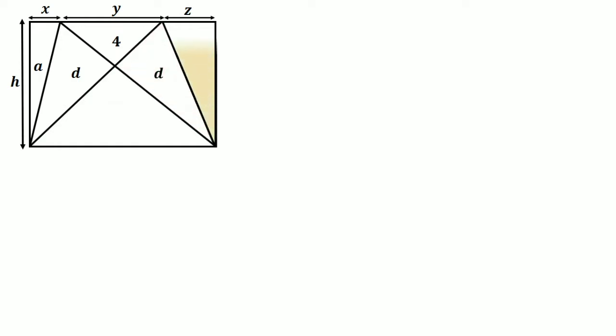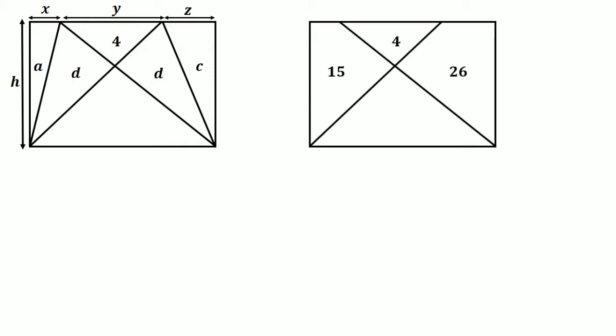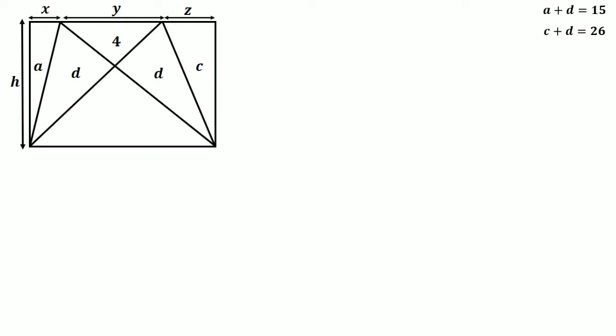Now let the area of this triangle be c. Looking back at our original figure, we can say that a plus d equals 15, and c plus d equals 26. Write this result in the corner. Let the area of the region we have to find be f, and let the width of the rectangle be g.